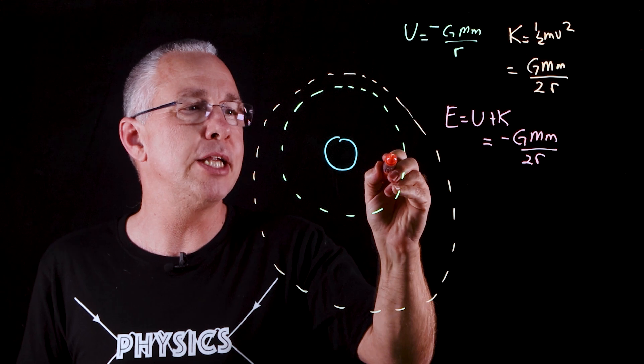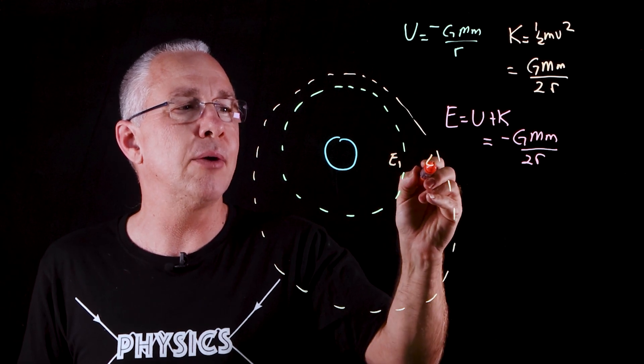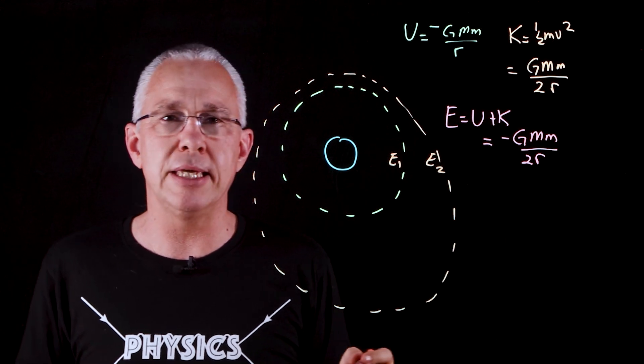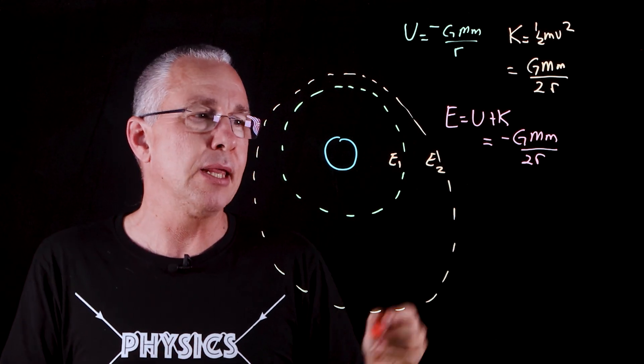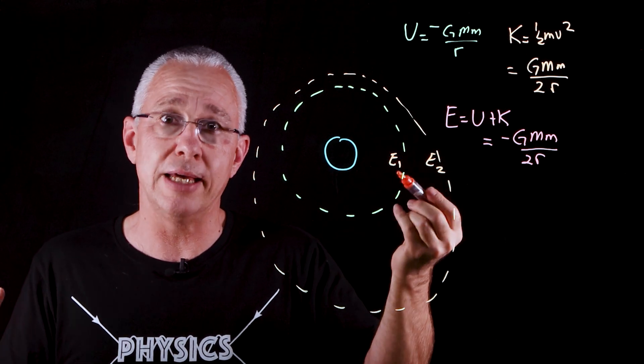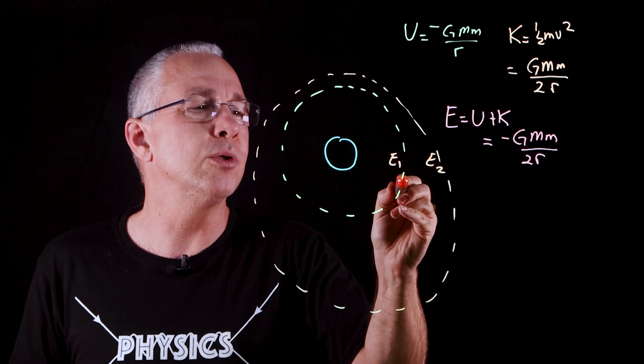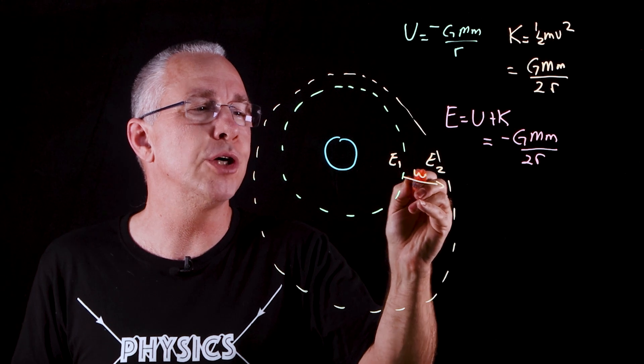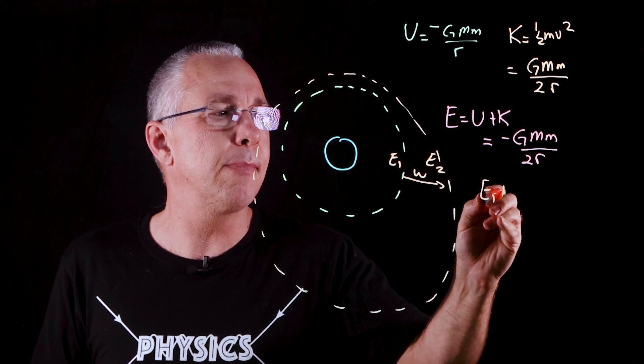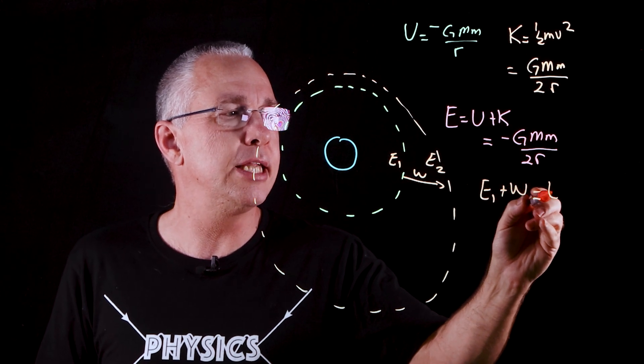So we have an energy that we started off with, and now we have an energy that we have left over. And that basically means you have an increase in energy. And so where does that energy come from? Clearly the satellite, in this case it could be a rocket of some sort, will need to do some sort of work to get it to that position. And so therefore energy one plus the work done gives us energy two.